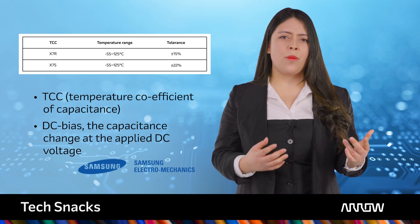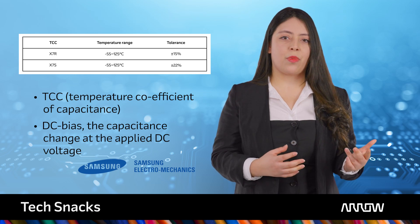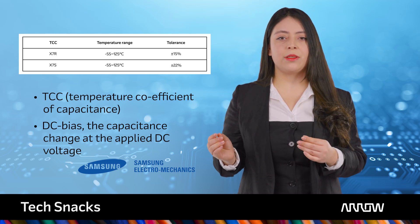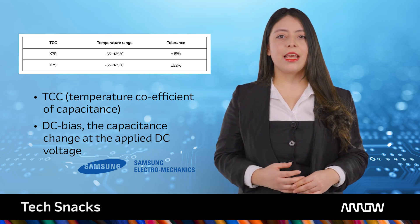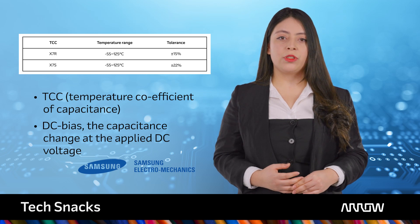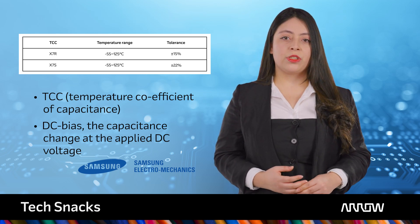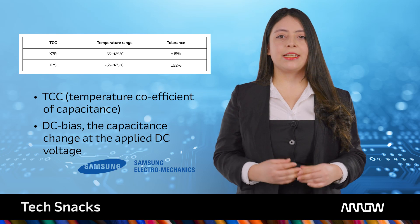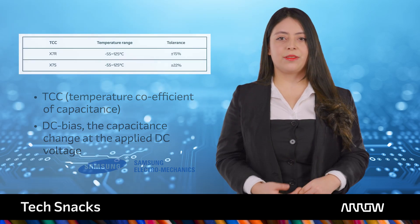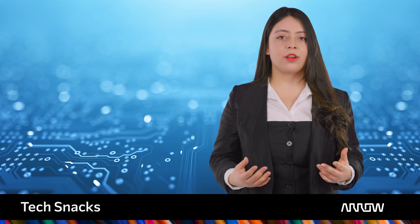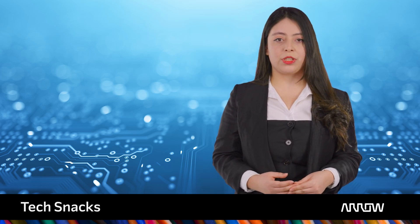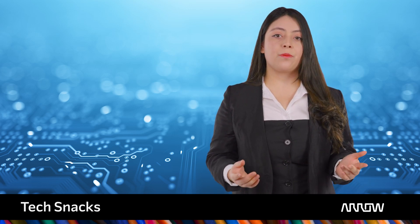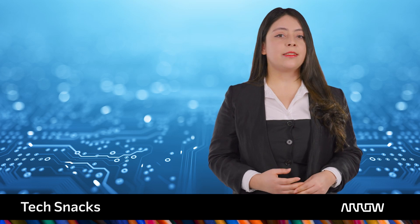While some X7R products offer better DC bias than X7S, the opposite is also true, with certain X7S MLCCs providing a distinct advantage. So how come not so many companies are specifying X7S MLCC? The answer, it appears, is nothing more than a lack of awareness.